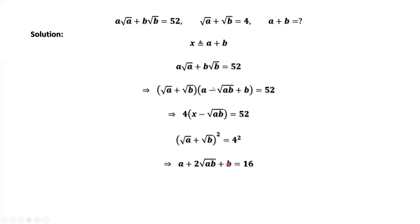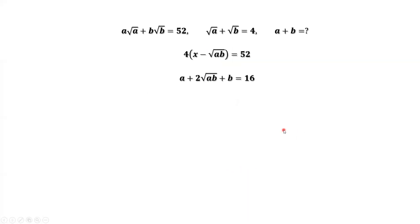A plus b is x. 2 square root of ab plus x equals 16. Solve this equation for square root of ab. We have square root of a times b equals 16 minus x divided by 2.